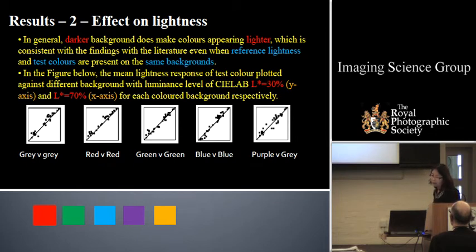The effect on the lightness. In general, the dark background does make colors appear lighter, which is consistent with the literature, even when reference light and test color are present on the same background. You can see the figure. The mean lightness response of test color plotted against different backgrounds with luminance level of L equals 30% shown on the y-axis and L equals 70% shown on the x-axis for each colored background respectively.